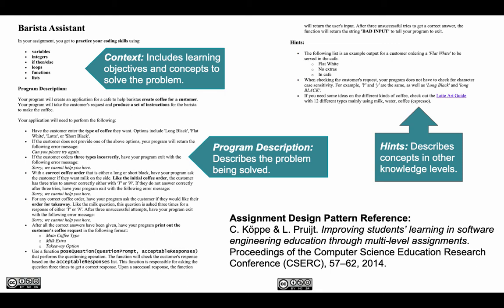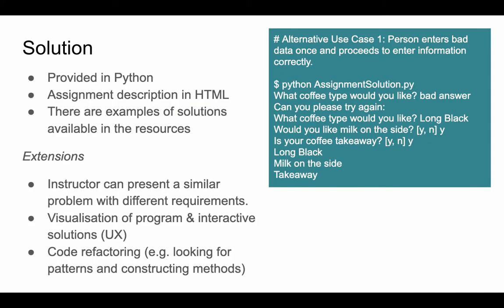The assignment also includes hints. For example, that students don't need to check for character case sensitivity, as well as a link to advice around what coffee types look like to help them in designing their menu. The assignment description is in HTML and the solution is provided in Python. On the screen, the green box shows an example of what a solution might look like. There are examples of solutions available in the resources.